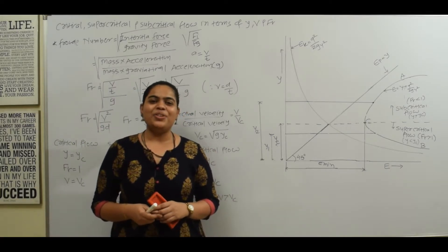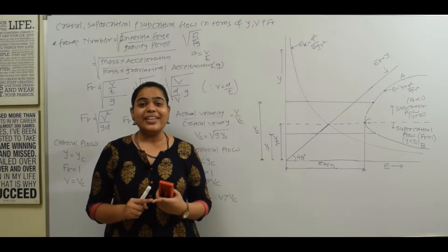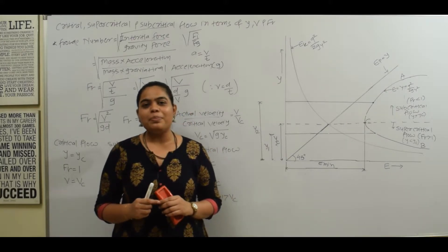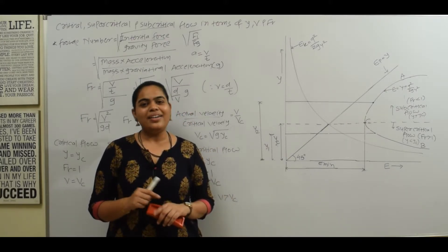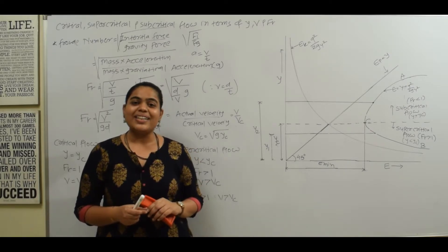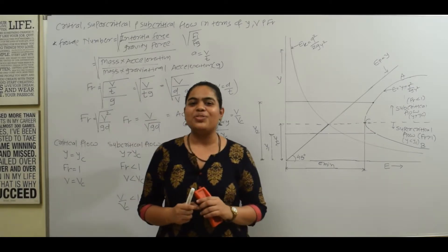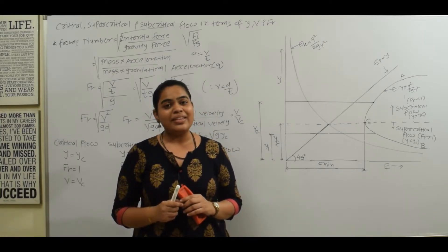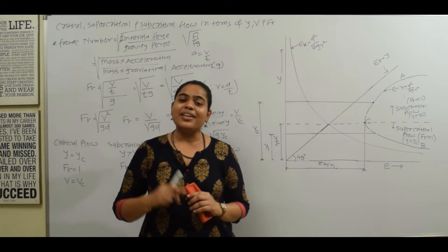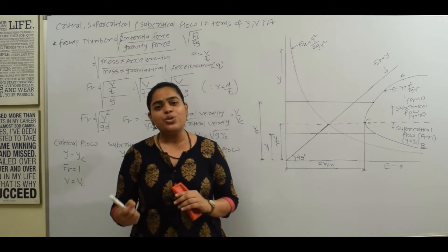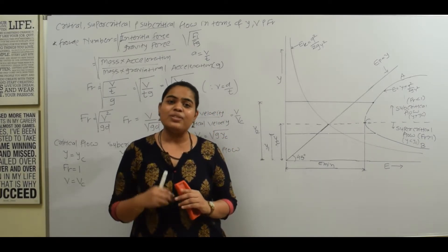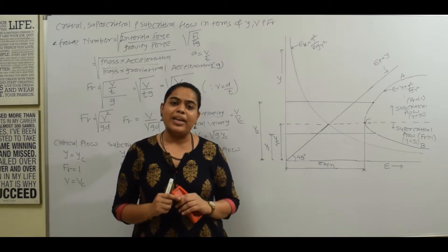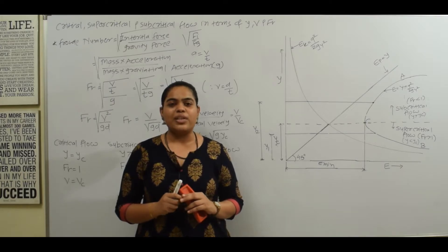Hi guys, Prof. Nidit Trivedi here. Today we are going to see what is critical, subcritical and supercritical flow in terms of Froude number, velocity of flow, and depth of flow. If you haven't seen my last video on what is a specific energy curve, critical depth, alternate depth, conjugate depth, and critical velocity, then check the link in the description.